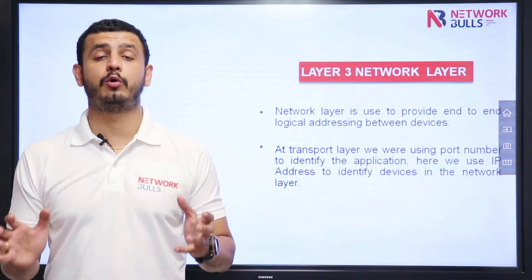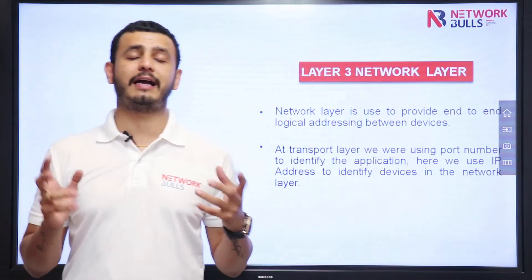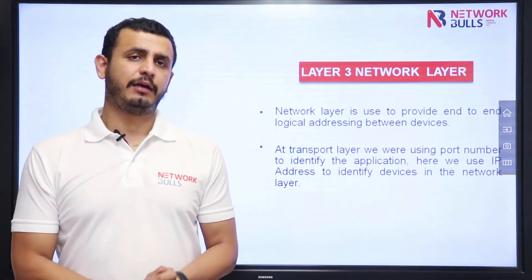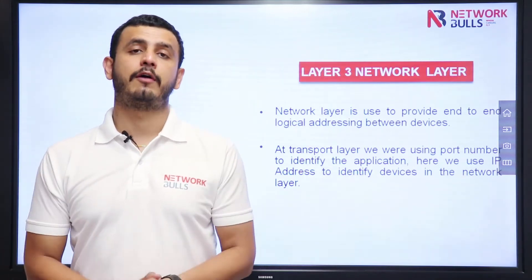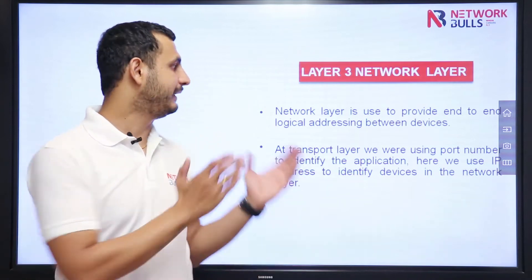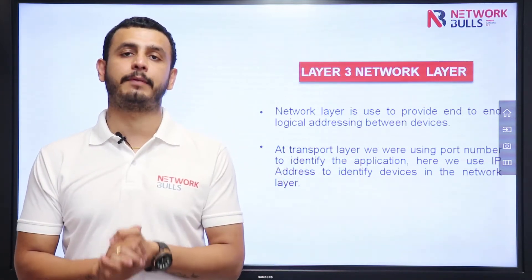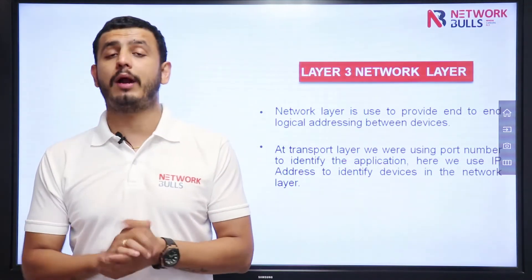Hello, in this video we will discuss Layer 3 network layer of the OSI model. In the last video we discussed transport layer. If you remember, at transport layer we were using port numbers for addressing, but at network layer we will use IP address for addressing purpose. Port numbers were used to identify the application, but here every device in the network will have an IP address.